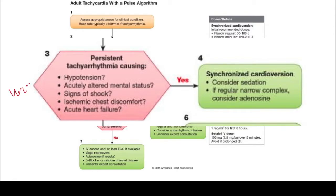Whenever we say stable or unstable, these are some of the things we're talking about. If a patient has a tachycardia and they're hypotensive, they're confused, they're having chest pain, or they have fluid in their lungs — those are things that make you think this patient is unstable and you have to go get the crash cart because you're going to be doing a synchronized cardioversion.